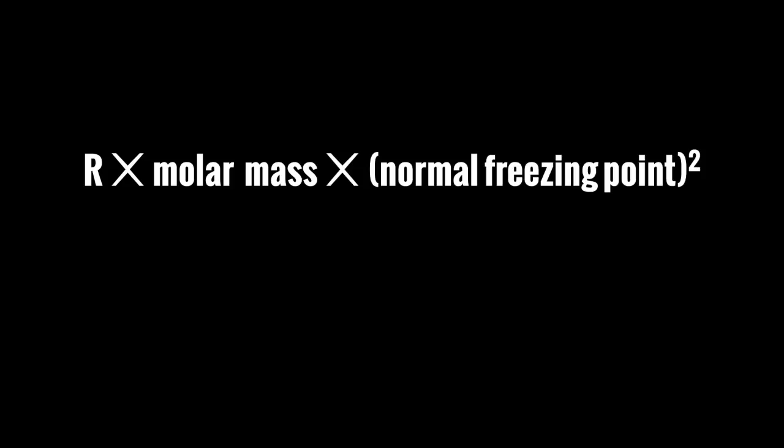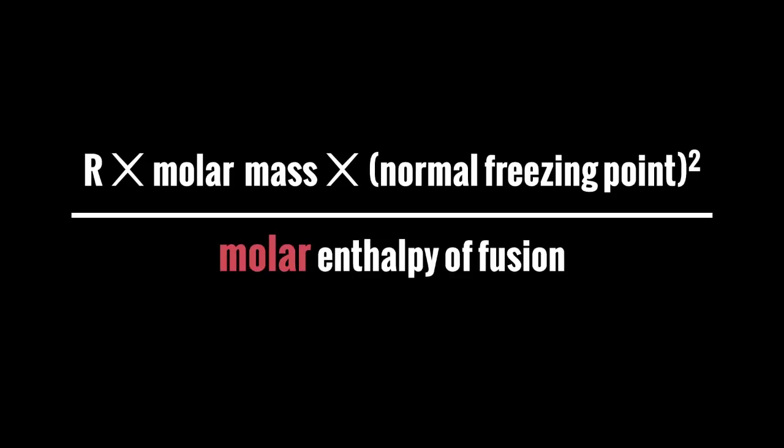Then we multiply that by the molar mass of the solvent, which is normally measured in grams per mole. Then we multiply that by the normal freezing point of the solvent squared. And then we divide all of that by the molar enthalpy of fusion. And we're talking molar enthalpy of fusion, which is joules per mole. So keep that in mind. And these are all properties of the solvent, not the solute.